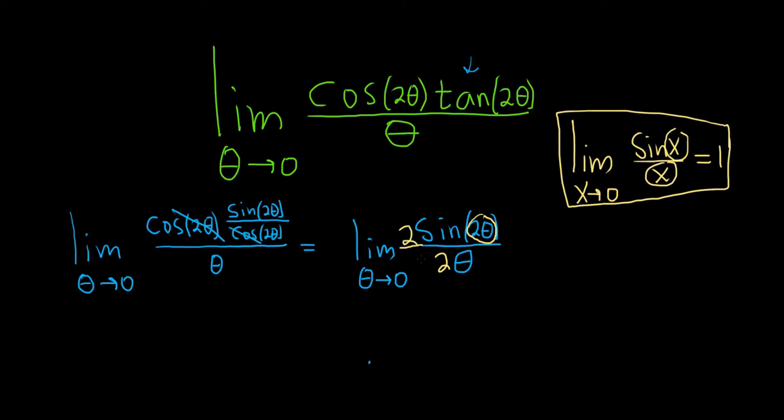And now what you can do is you can pull this 2 out. So you can write it like this. Limit theta approaches 0 of sine 2 theta over 2 theta.